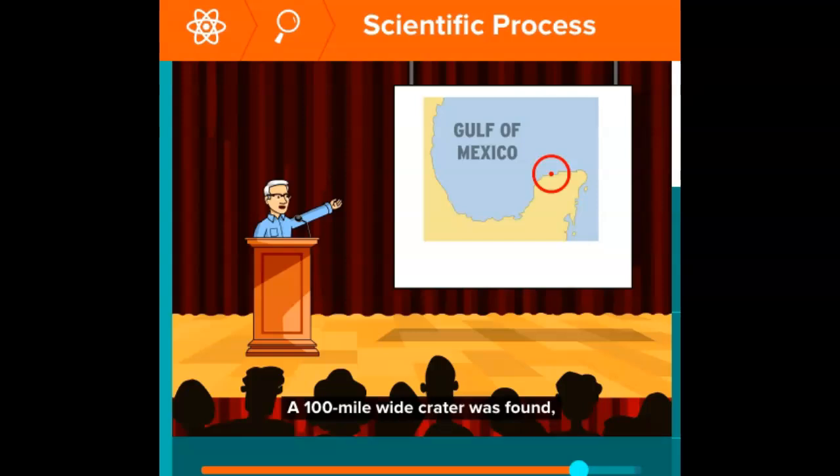A hundred-mile-wide crater was found deep in the sea off the coast of Mexico. As Alvarez's hypothesis gained support, it became known as impact theory.